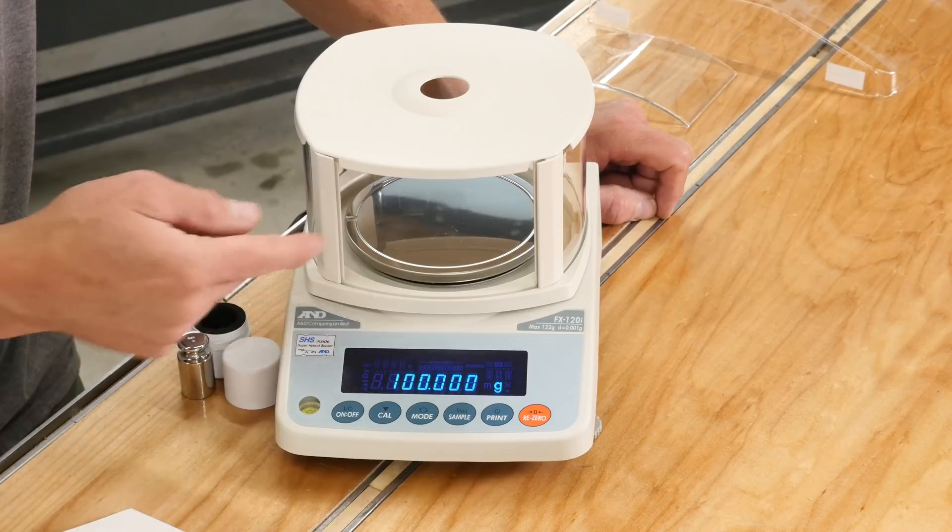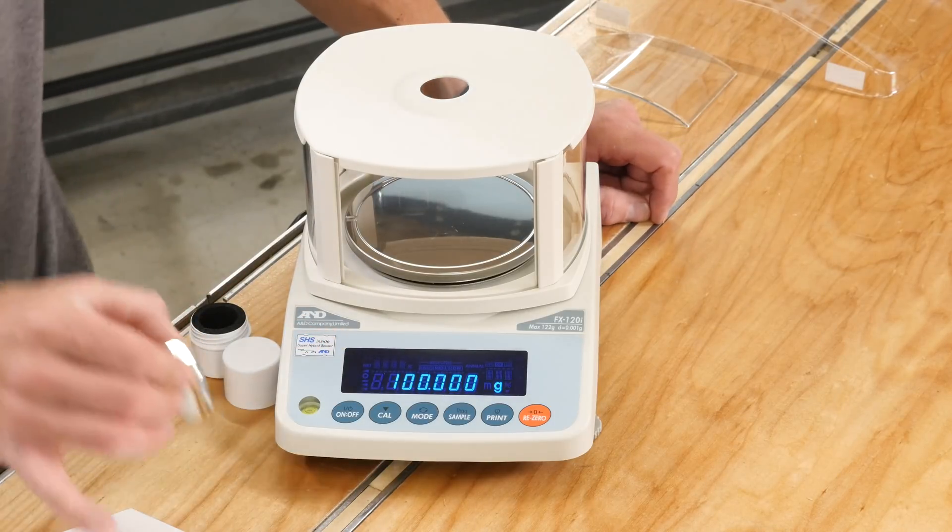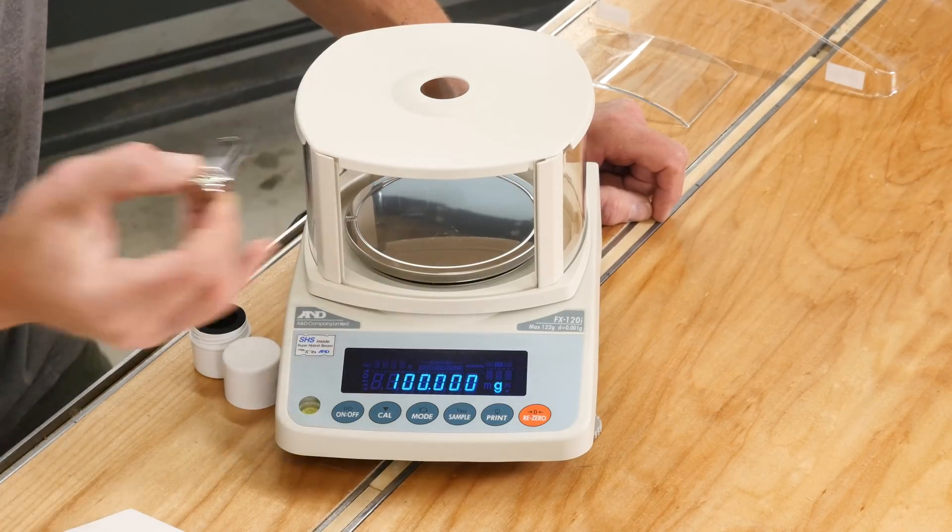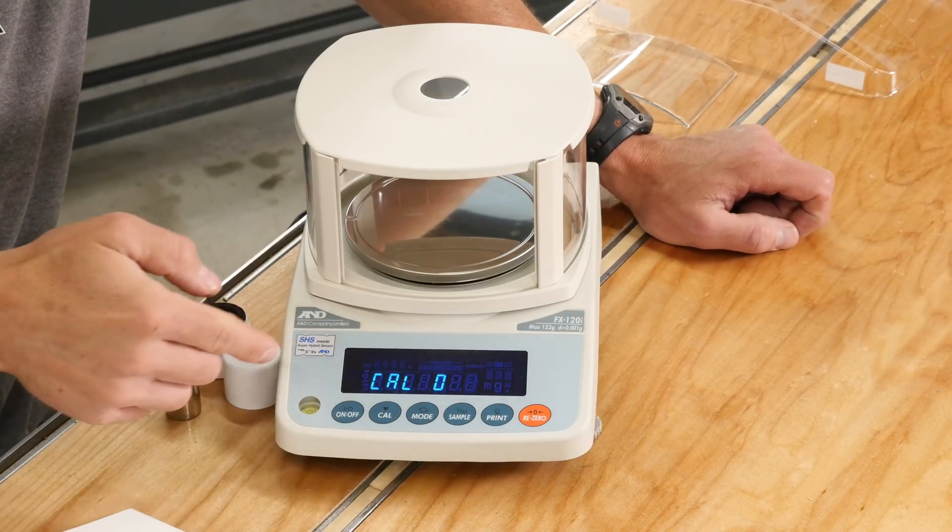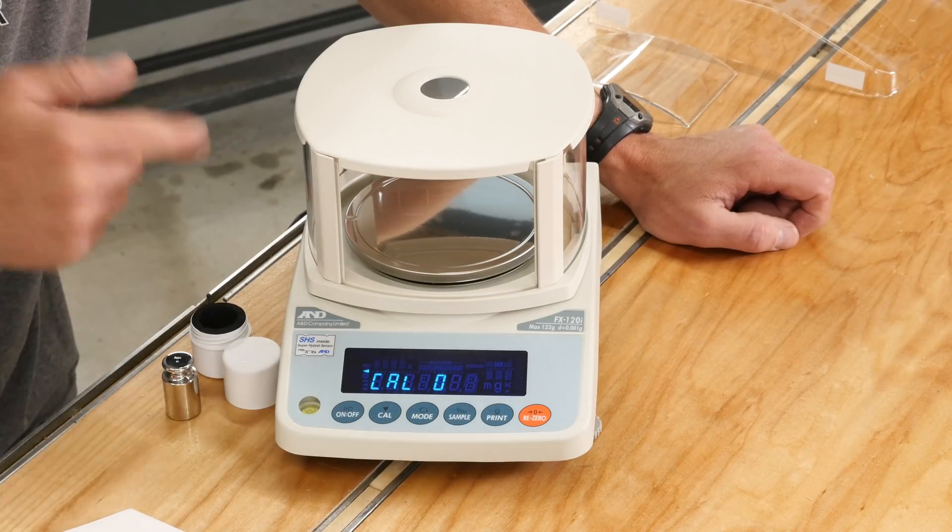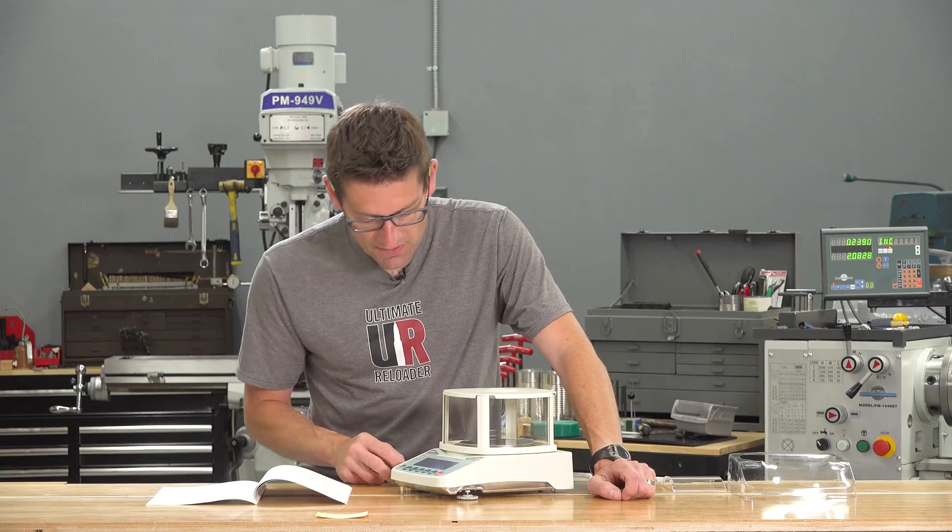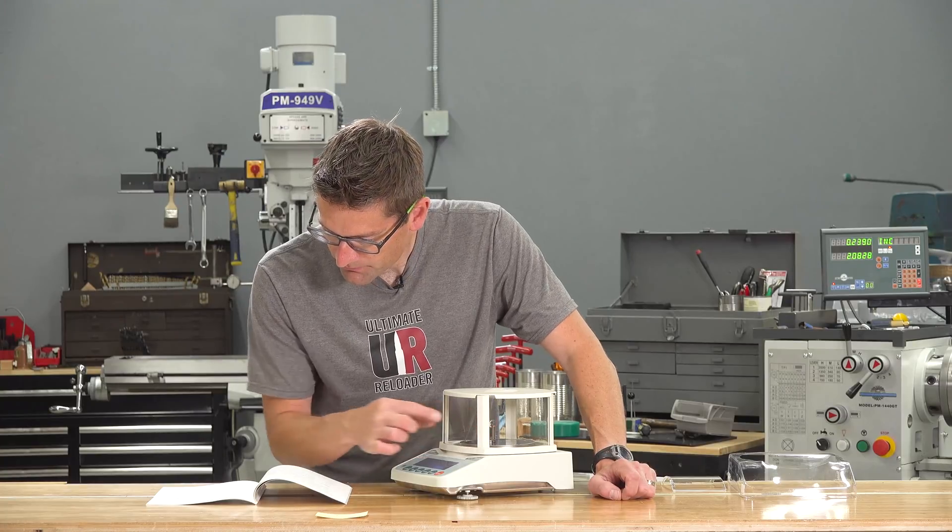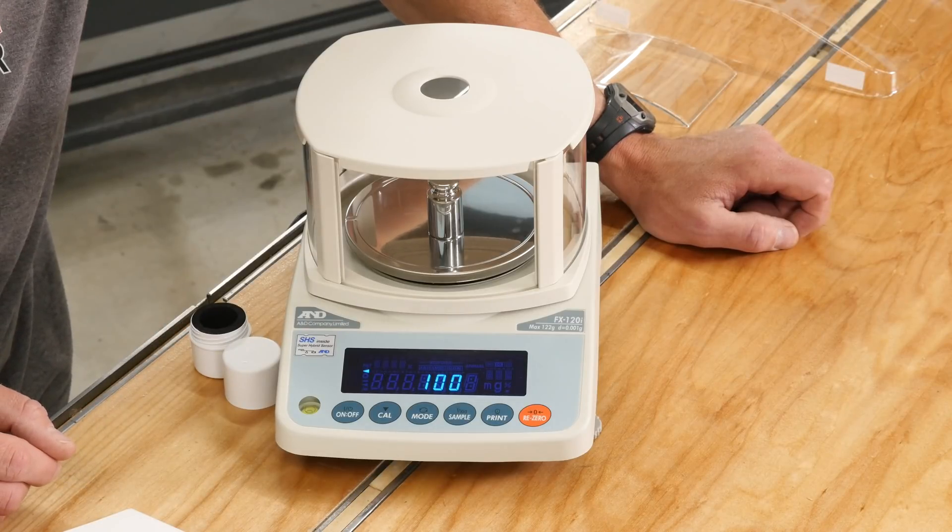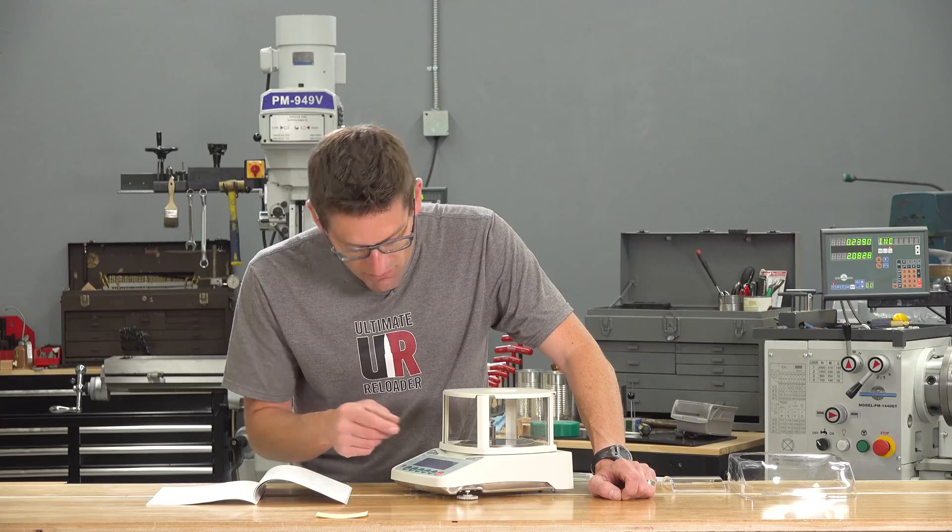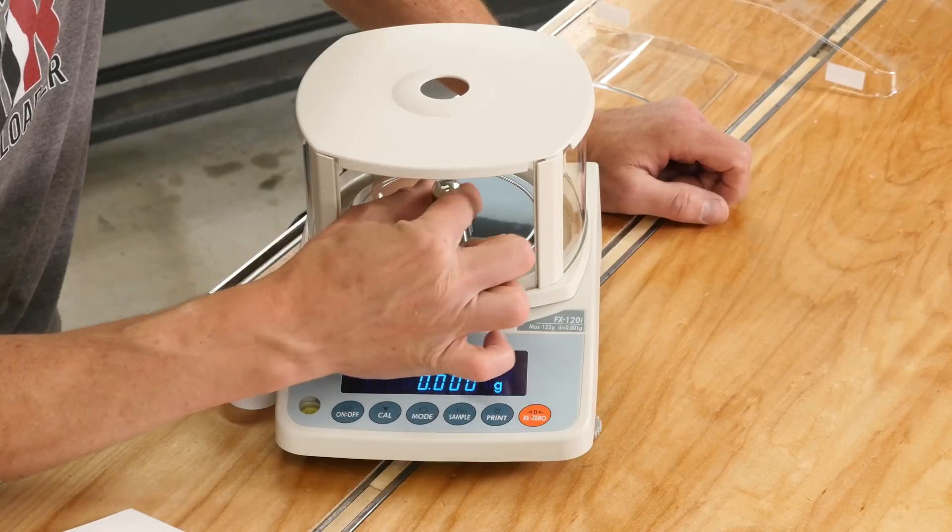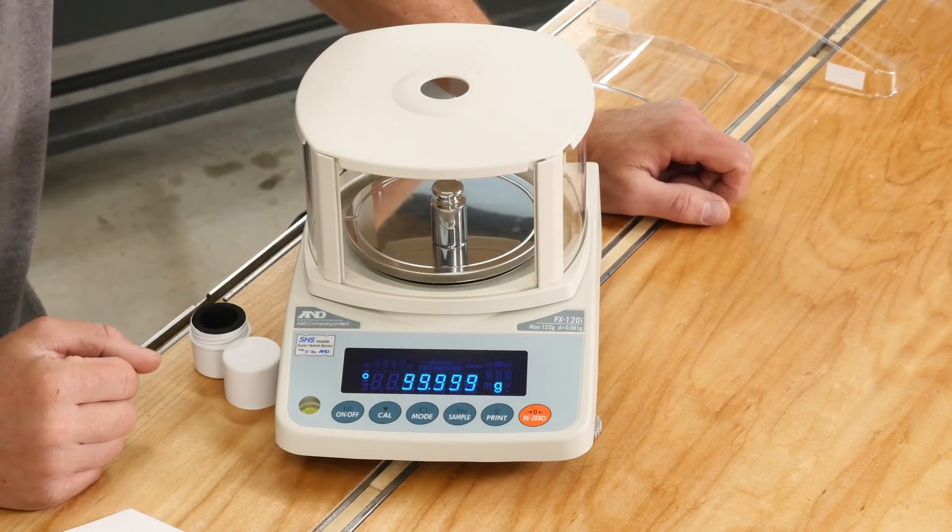Now we can actually hit sample here and it'll show us what our reference weight is. And we can use different keys to increment or decrement that weight depending on which type of reference weight we have. This is 100 gram. We have 100 gram displayed. So if we hit print, it will exit that. We hit print one more time with nothing on the scale, and then it stores that zero point calibration. Now it says 100, so we're going to put 100 on the scale. Then we hit print. And when it says end, we can take the calibration weight off the scale. Now we're back at zero. And if we put the weight back on, we should come to 100.000. And there we go.